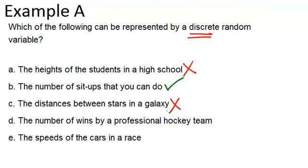The number of wins by a professional hockey team. That would be discrete because there is only a finite number of wins that you could have. You could have zero wins up to however many games that there are. You couldn't have a half win or anything like that. You can list out all the possible values of this variable. So that means it is a discrete random variable.